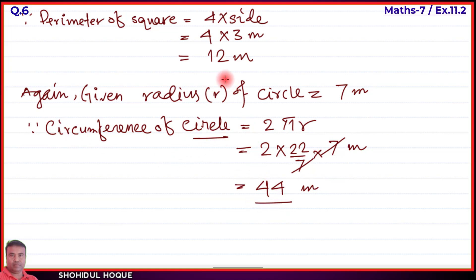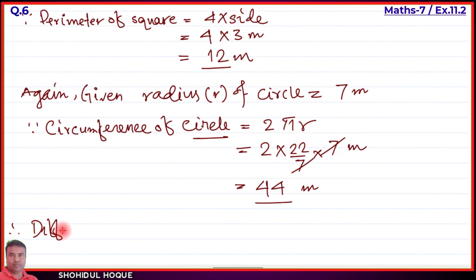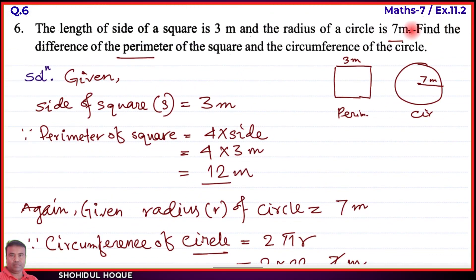The circumference is 44 meters and the perimeter of the square is 12 meters. Now we find the difference of the perimeter of the square and the circumference of the circle.